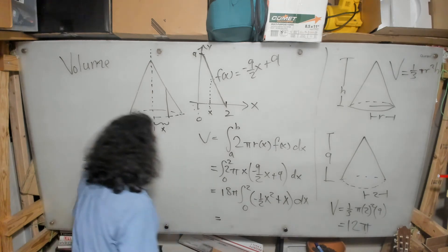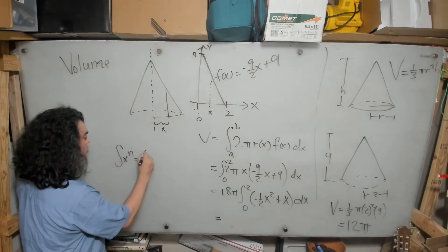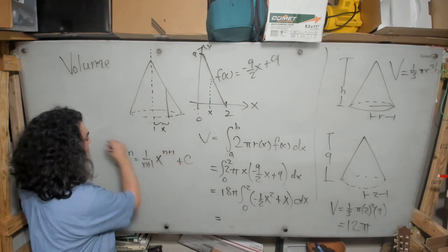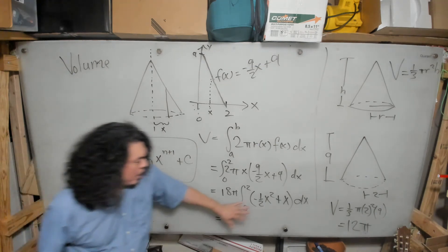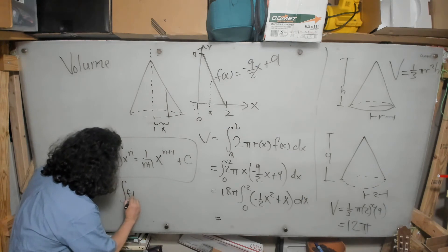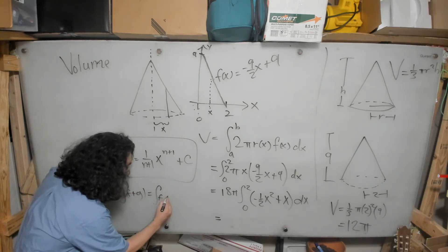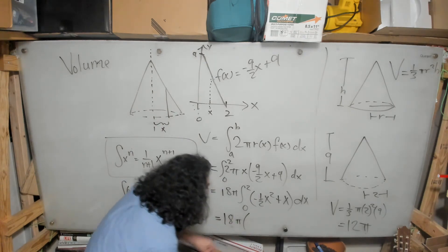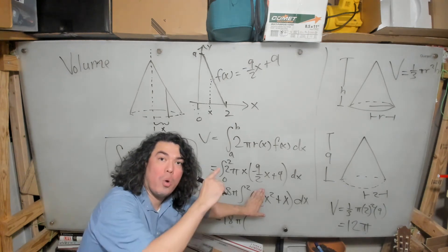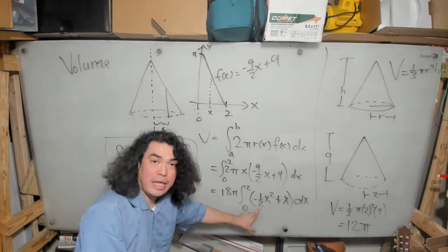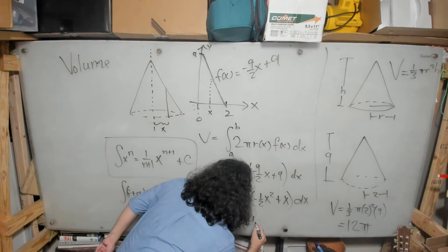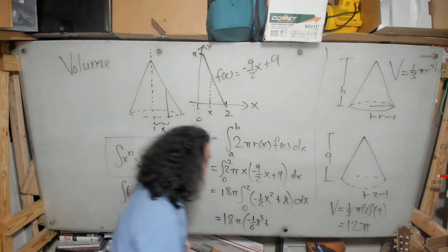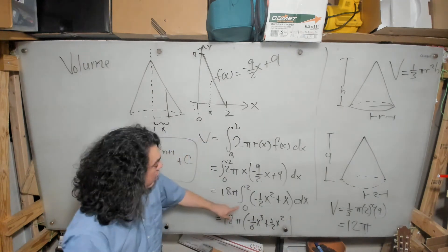Using the power rule — ∫x^n dx = x^(n+1)/(n+1) — and the fact that the integral of a sum is the sum of integrals, we get: 18π · [−1/6 · x³ + 1/2 · x²] evaluated from 0 to 2. The −1/2 on x² combines with the 1/3 from the power rule to give −1/6.